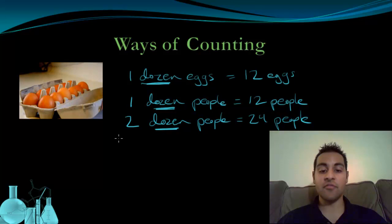If you look at the way I phrased these, I said one dozen eggs, one dozen people, two dozen people. If I just said something like, I have a dozen, well that doesn't mean anything. A dozen by itself isn't a unit. It just tells us there's twelve of something. Well a mole is similar.